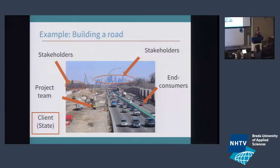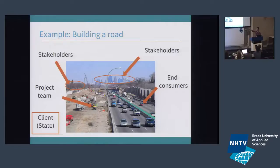A diagram shows them all in one image. The end consumers are the people using that road. The new road is being built by this project team. There are stakeholders all around — the people in the city who need to travel up and down every day, or the people living right beside the road who deal with a lot of noise. And then there's the client — the state who actually commissions the road being built — which might have different levels: province, municipality, state. Think about your project and all the different layers of people that you need to communicate with.